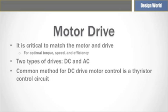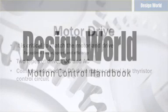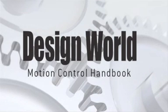DC drives control DC motors. A basic DC drive is similar in operation to an AC drive in that the drive controls the speed of the motor. For DC motor control, a common method is a thyristor-based control circuit. These circuits consist of a thyristor bridge circuit that rectifies AC into DC for the motor armature, and varying the voltage of the armature controls the motor speed.